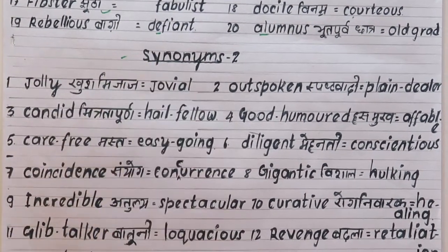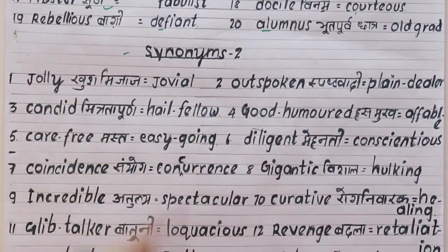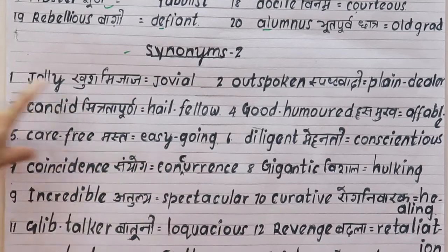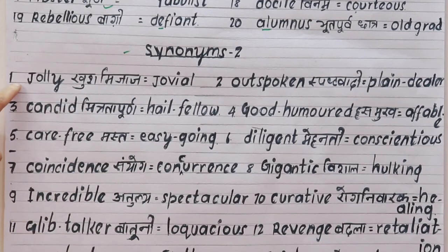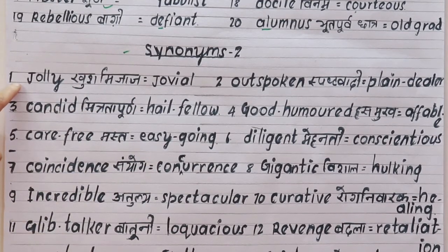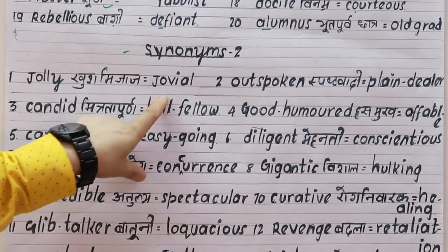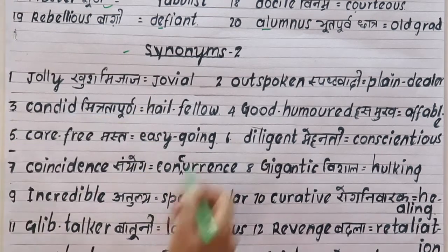Now Part Two — Synonyms Two. First word is 'jolly', meaning cheerful or happy by nature. The synonym is 'jovial'. For example: I am jolly by nature, I am jovial by nature.